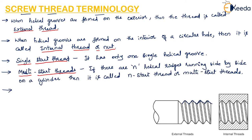A taper thread is formed on the exterior of a right circular cone or on the interior of a right circular conical hole. So a taper thread is formed on a cone, where the grooves or threads are formed on this cone.